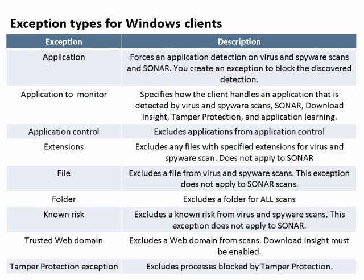A number of different exception types for Windows clients exist. We have the exception listed on the left-hand side of this table with the description of the type on the right. We could make an exception type for a certain application to monitor and see how the client actually handles that application once it's been detected. We can also exclude certain files and extensions, folders, or known risk areas.